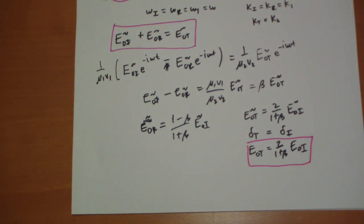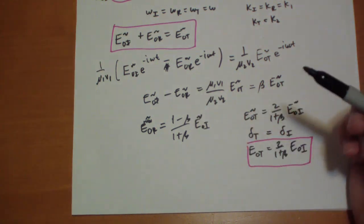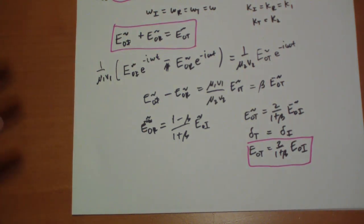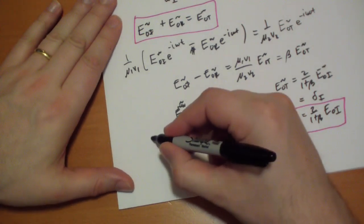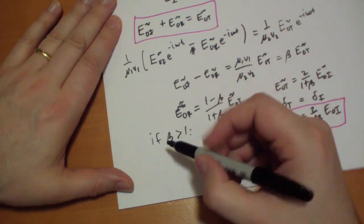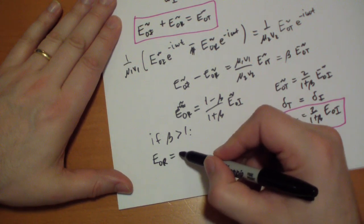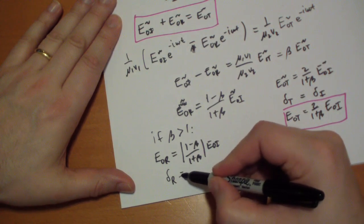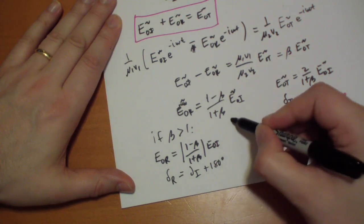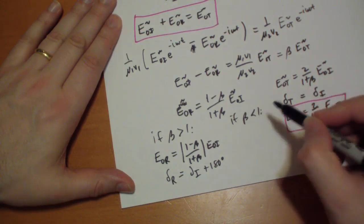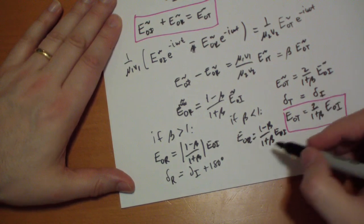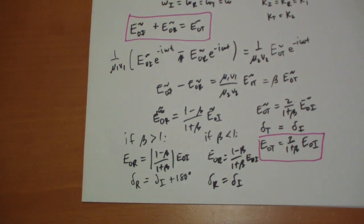The weirdness comes over here, is beta could be greater than or less than 1. If beta is bigger than 1, then E naught r is going to be the negative of E naught i. And the way you can represent that with complex numbers, you just add 180 degrees to the phase constant. So if beta is greater than 1, then E naught r is equal to 1 minus beta over 1 plus beta absolute value, and the phase constant of the r is going to be equal to the phase constant of the incident plus 180 degrees. But if beta is less than 1, then we just say E naught r is equal to 1 minus beta over 1 plus beta E naught i, and then the phase of those two are equal. It depends on whether beta is big or little.